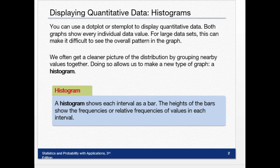We often get a clearer picture of the distribution by grouping nearby values together. Doing so allows us to make a new type of graph, which is called a histogram. A histogram shows each interval as a bar. The heights of the bar show the frequency or the relative frequency of values in each interval.